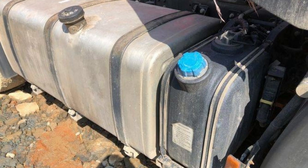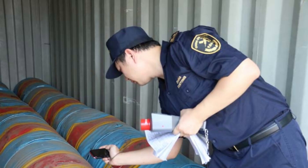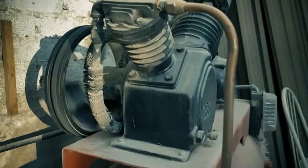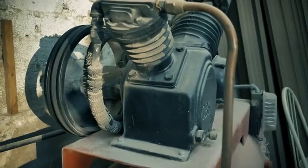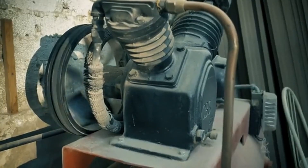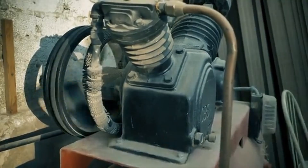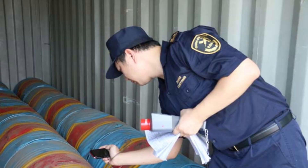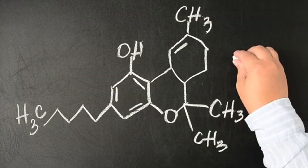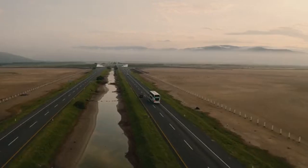The truck arrives at the final destination with the load compartment sealed. At the customs office of destination, the seals are checked to ensure they haven't been tampered with. The truck is unsealed, the goods are inspected, and the TIR operation is terminated. An electronic confirmation is sent to IRU and all stakeholders by customs.